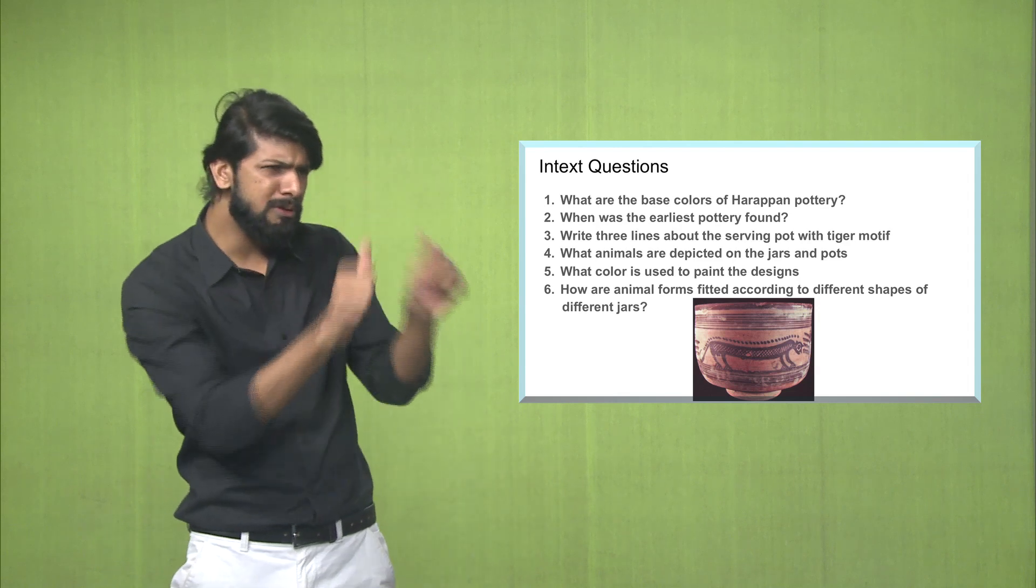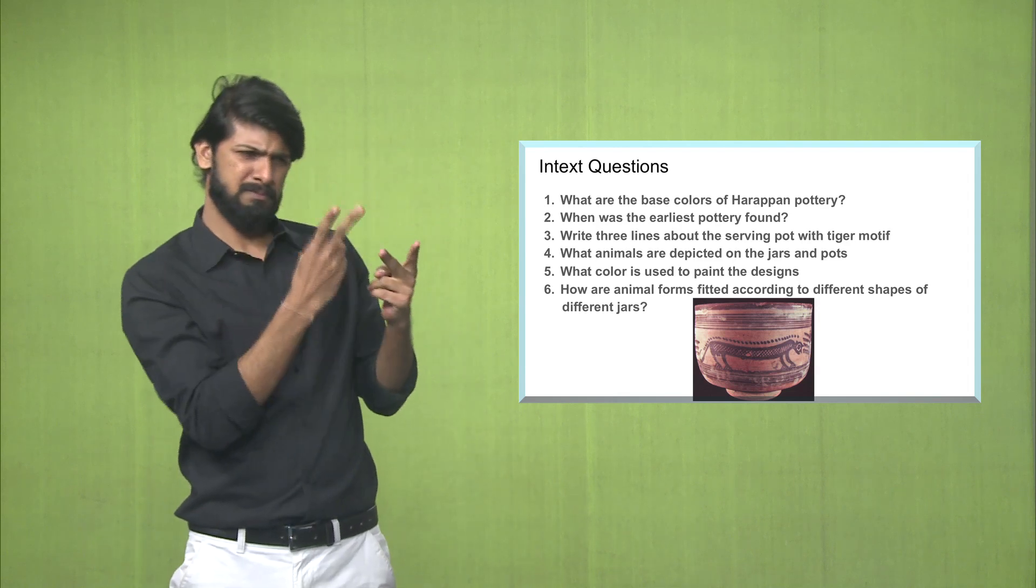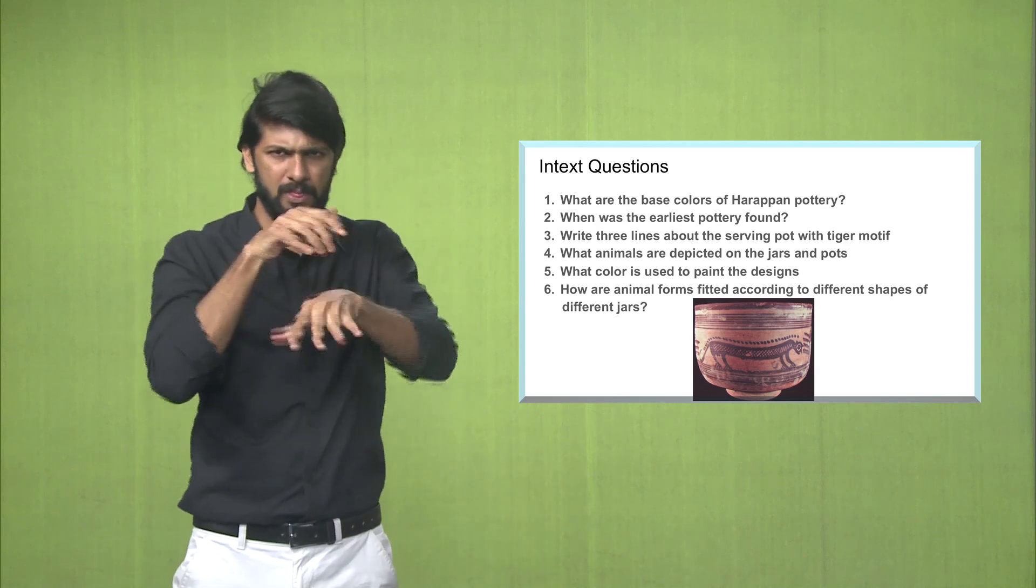How are animal forms fitted according to the different shapes of the different jars?